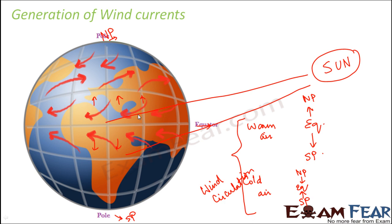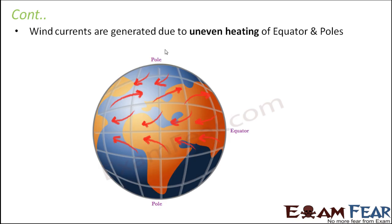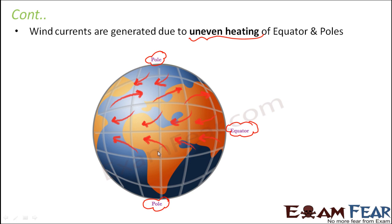I hope this concept is clear because it is very, very important — the generation of wind currents. What is the primary factor responsible? The primary factor is nothing but the uneven heating of the earth. The equator is more heated compared to the poles because of the spherical shape of the earth. Due to this difference in heating, the temperatures at these two places differ, causing circulation of air and resulting in wind currents. Uneven heating is the main cause behind the generation of wind currents.